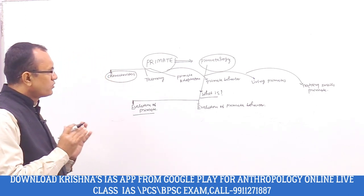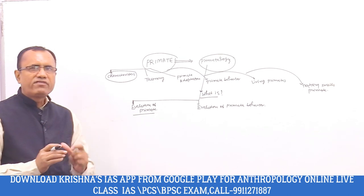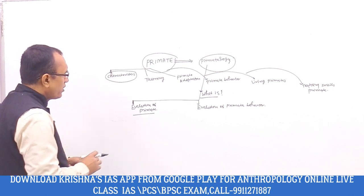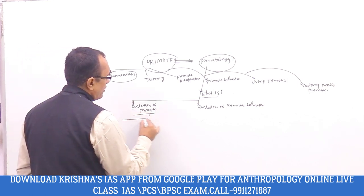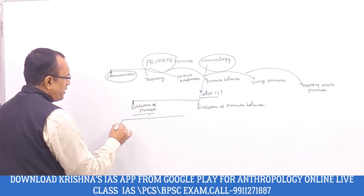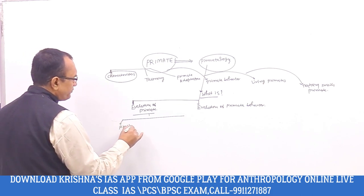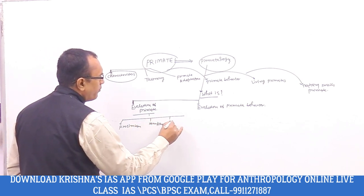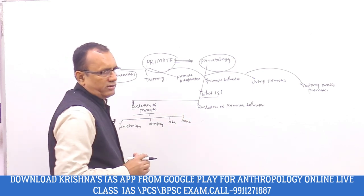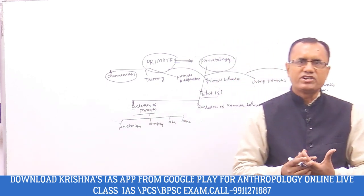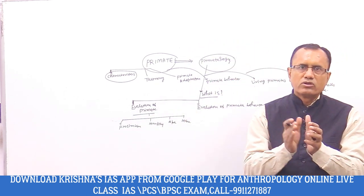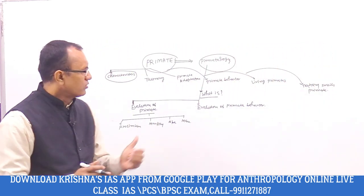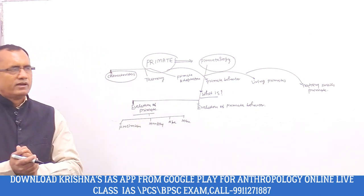So primatology has two important components. The first is the study of evolution of primate. When we are talking about evolution of primate, we try to understand about the evolution of prosimian, monkey, ape, and man. We know that man is known as a higher primate.